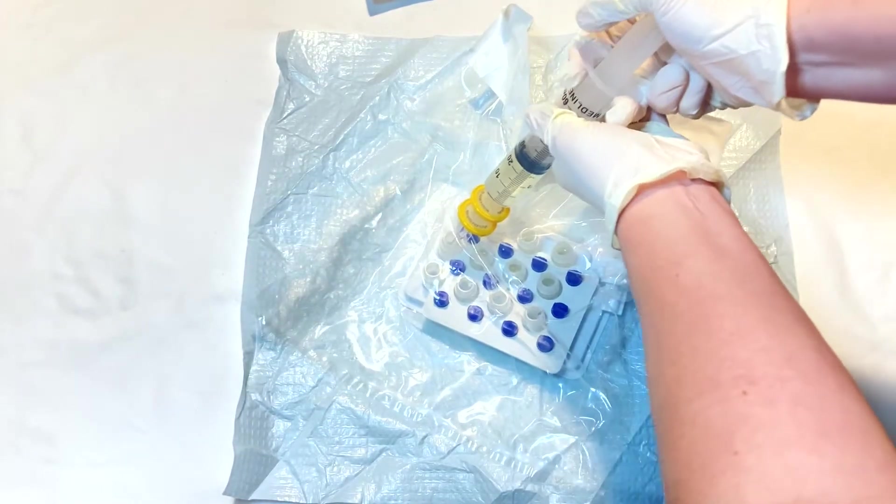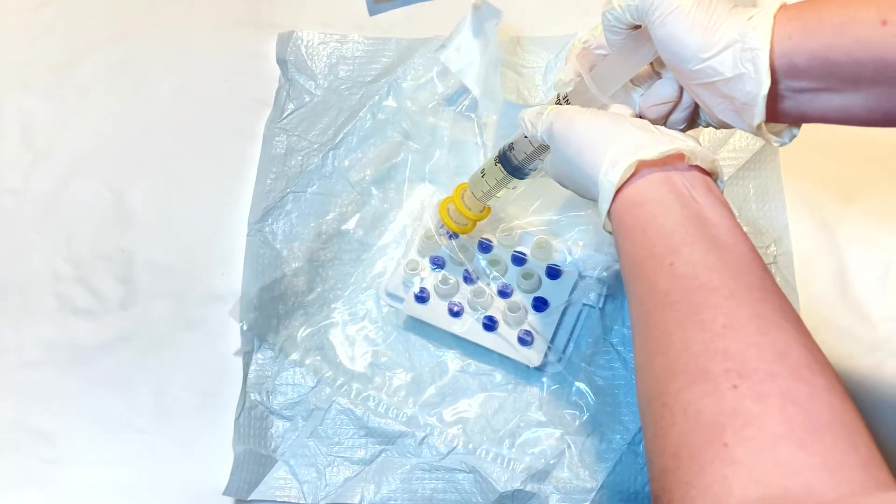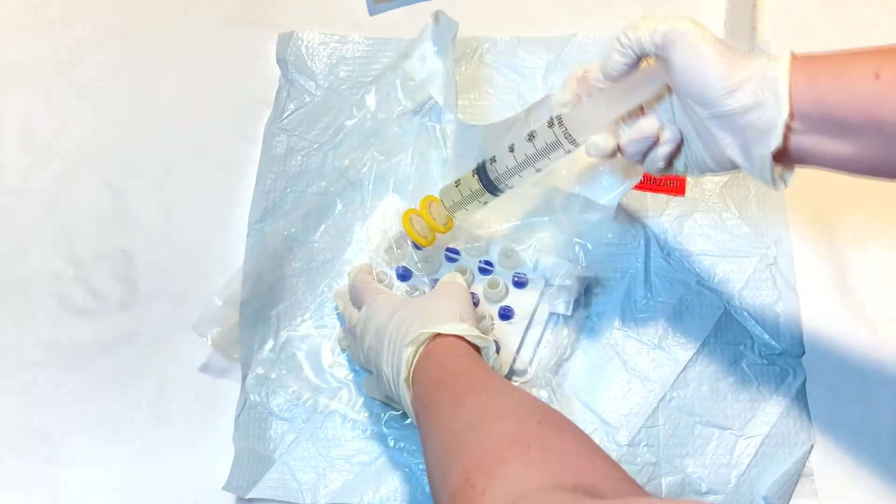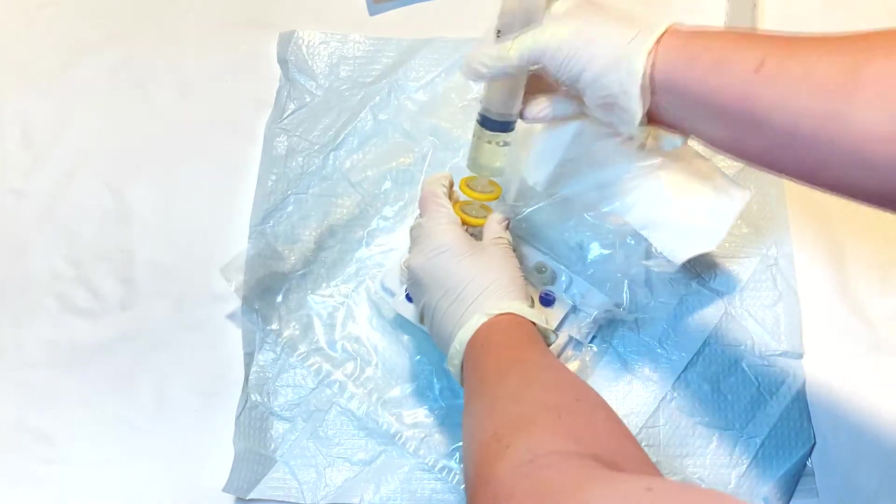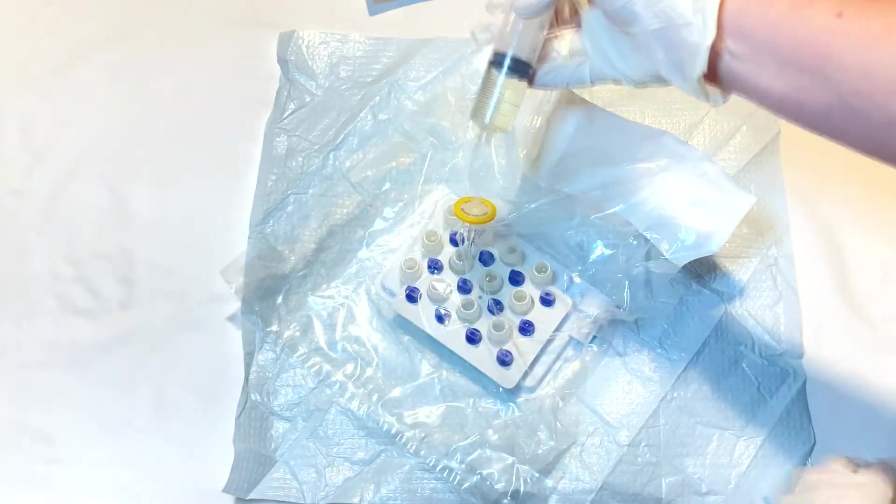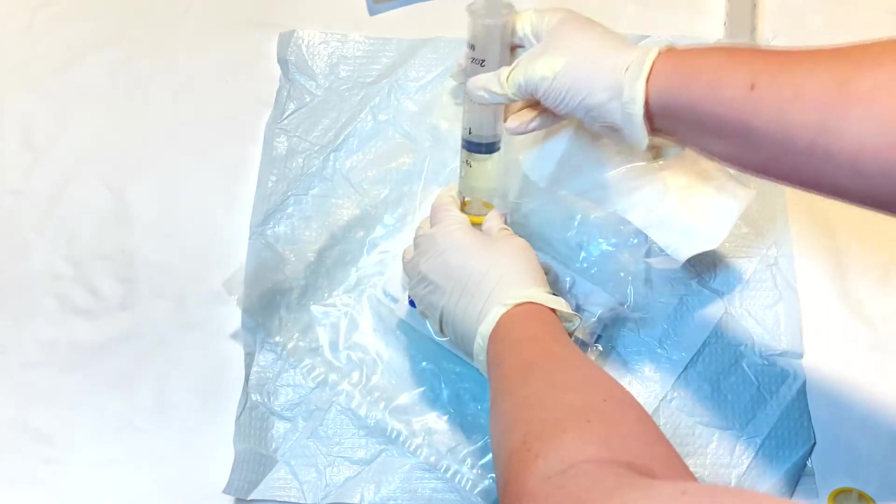If syringe dispensing becomes too difficult, one of the possible causes is a clogged filter. If the proximal filter becomes clogged, detach it from the other filter, attach the syringe to the remaining distal filter and resume injecting into the eyedrop bottles.